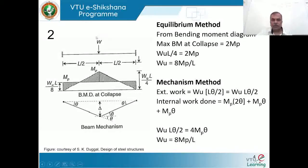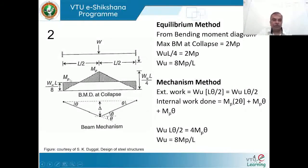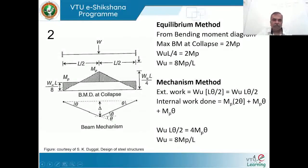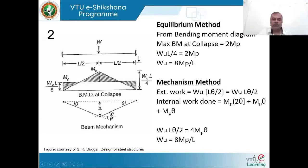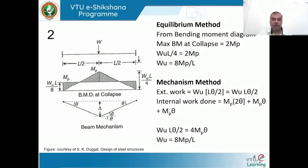In the fixed beam, we have two types of bending moment diagrams. One is the free bending moment diagram due to the external load — triangular because the load is concentrated and moment variation is linear. The other arises from the fixed end moments at both ends, where the fixed moment diagram is rectangular in nature.